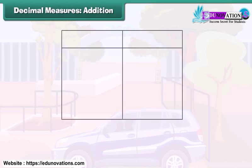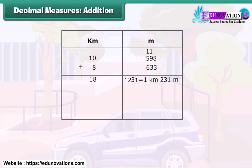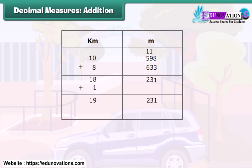The total distance covered by Ryan and his uncle can be calculated by adding both the distances. First, make two columns. In the first column, write kilometers (km), and in the second column, write m, that is meter. Write 10 under kilometers and 598 under meters. Below 10, write 8, and below 598, write 633. Now add it. The sum of 598 meters and 633 meters is 1,231 meters, which is equal to 1 kilometer and 231 meters. Thus, 1 kilometer is added to 18 kilometers. In total, they have covered a distance of 19 kilometers and 231 meters.